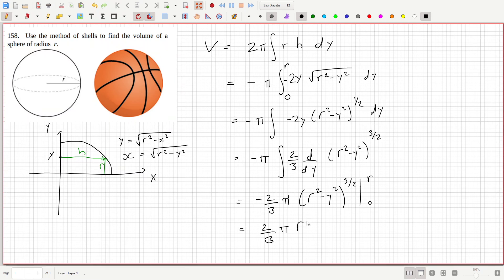Or or or power three over two, the twos cancel, so that's two thirds pi r cubed.